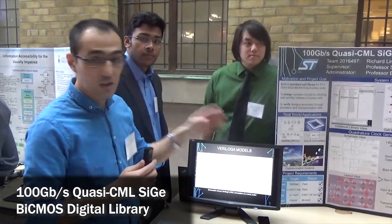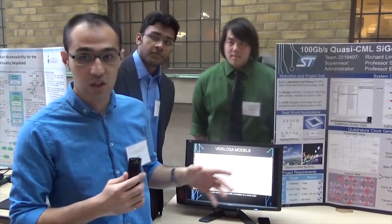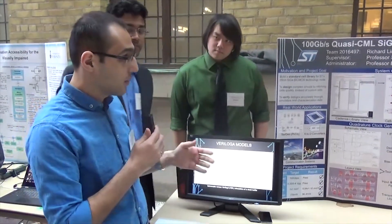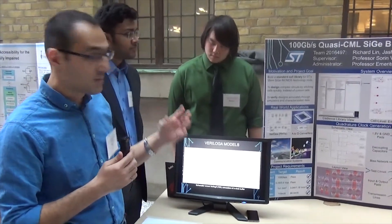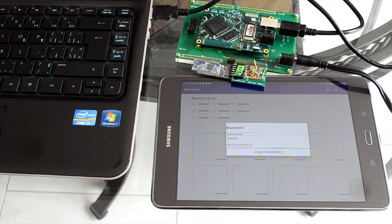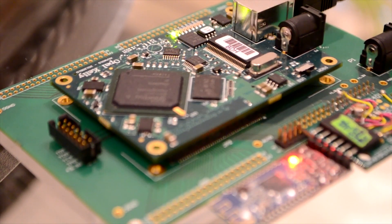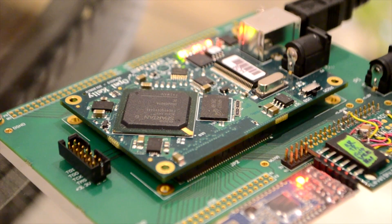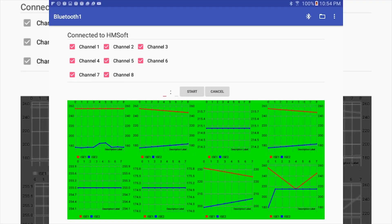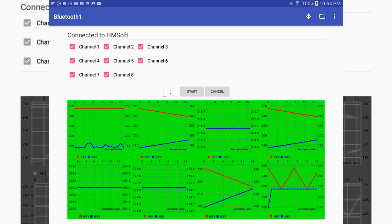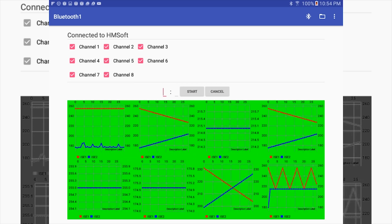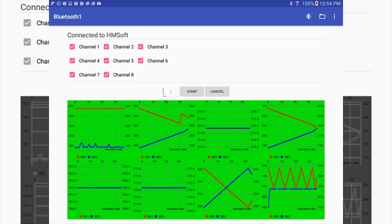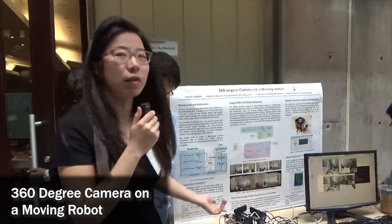This is a 100 gigabits per second quasi-CML CG by CMOS digital library project. The idea is to make standard cells to be used by other circuit designers to build circuits faster. We have built basic cells such as inverters, AND gates, latches, and emitter followers, and we've put them together into a test circuit that generates clock signals. This circuit tests the functionality and proves the concept of our library.